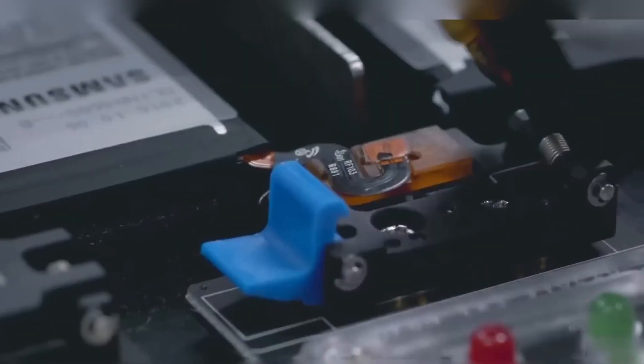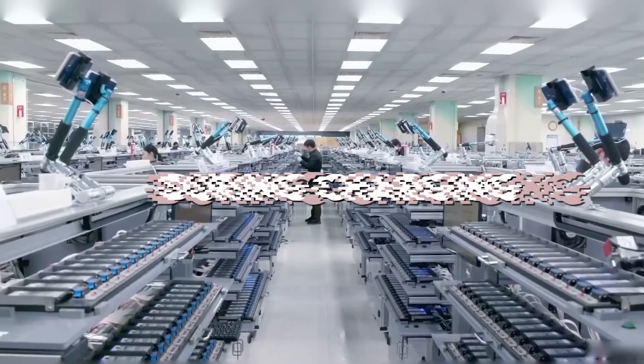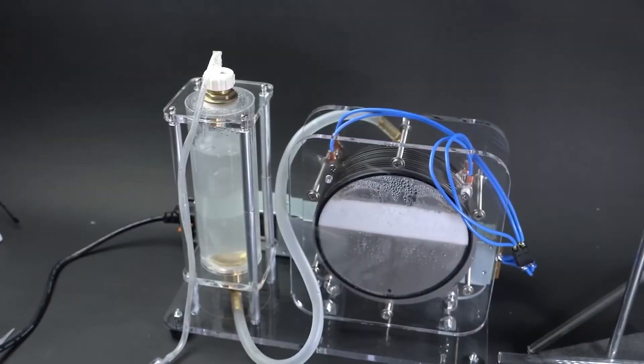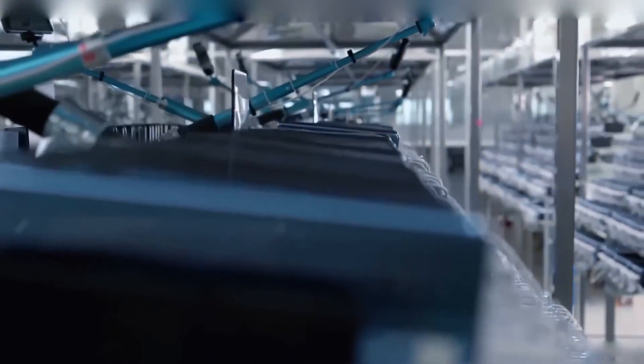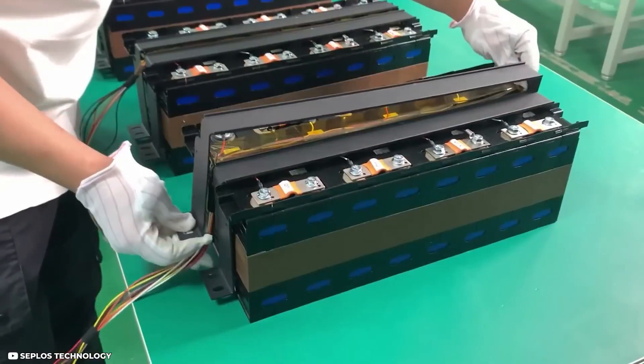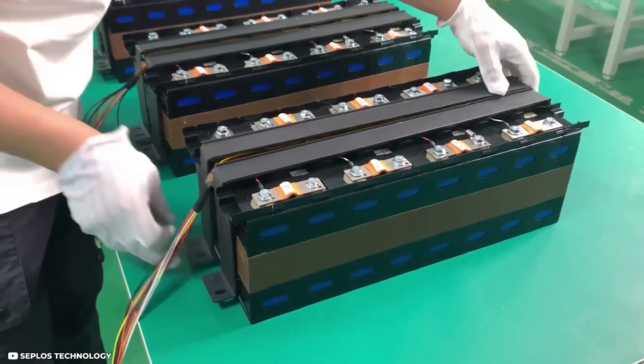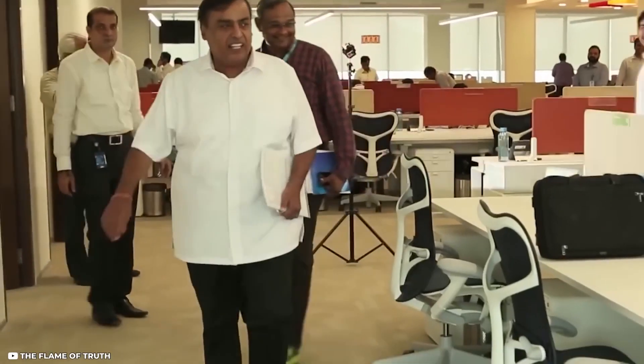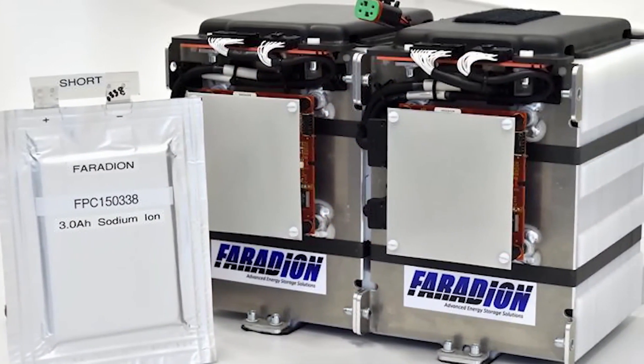The operating principle of a sodium-ion battery: During charging, sodium ions are extracted from the cathode and inserted into the anode while the electrons travel through the external circuit. During discharging, the reverse process occurs, where the sodium ions are extracted from the anode and reinserted in the cathode, with the electrons traveling through the external circuit doing the useful work.